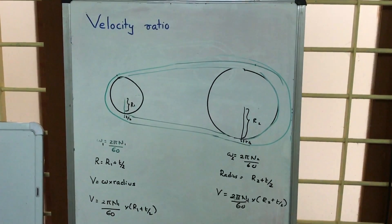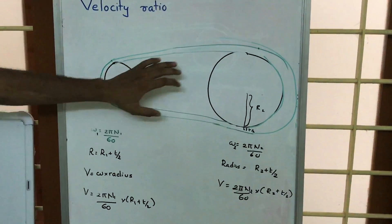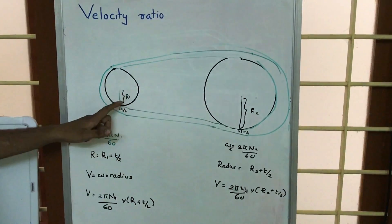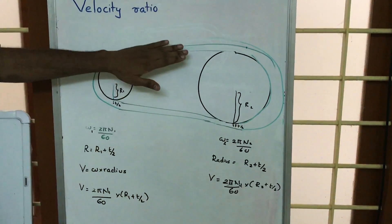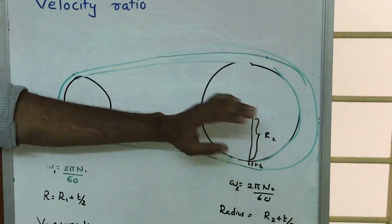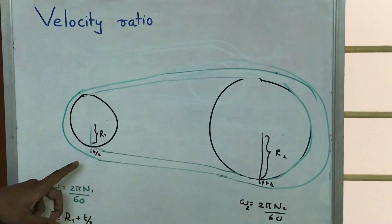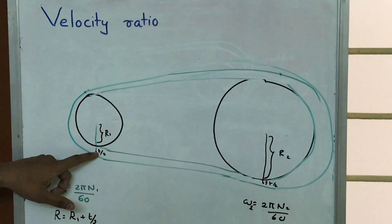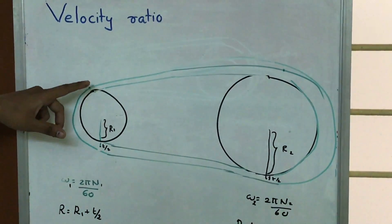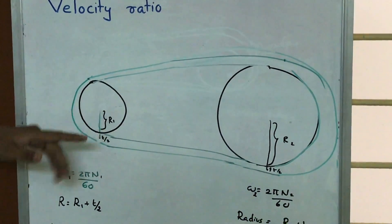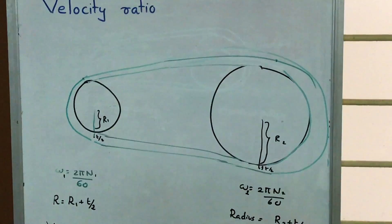The velocity ratio of belt drive is being discussed here. There is a driving pulley and a driven pulley, where the radius of the driving pulley is R1 and that of the driven pulley is R2. We have a belt of uniform thickness t, with half-thickness t/2. Let the driving pulley rotate at RPM n1 and the driven pulley rotate at RPM n2.